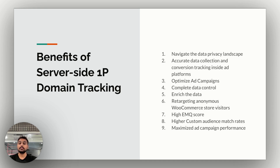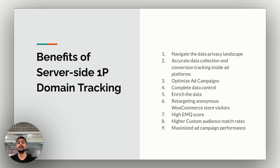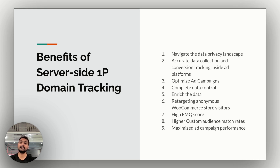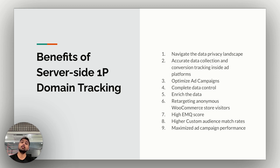The second benefit is accurate data collection and conversion tracking inside ad platforms — both crucial for effective ad campaign optimization. With server-side 1P domain tracking, WooCommerce marketers can ensure data is captured comprehensively across all user interactions without signal loss, and sync all conversion data inside ad platforms accurately. This leads to accurate conversion attribution and visibility into true campaign performance. The third benefit is optimizing ad campaigns — when high-quality first-party data is sent through server-side connections to Meta Ads and Google Ads, you are training the algorithms with high-quality data, enabling more effective retargeting and better ad targeting.